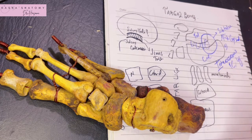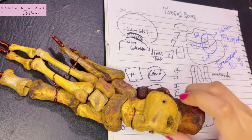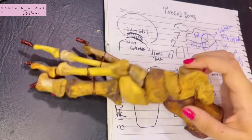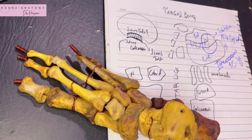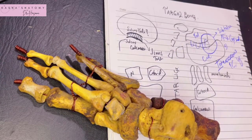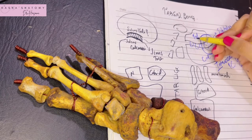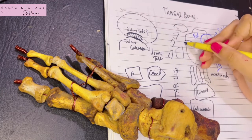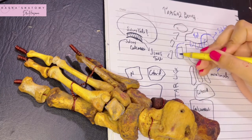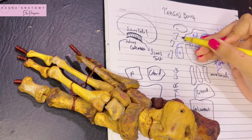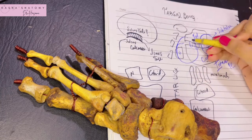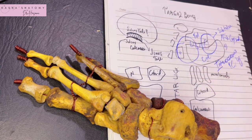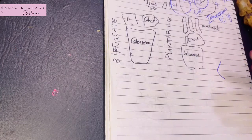The strongest ligament is the interosseous talo-calcanean ligament, and during eversion it is taut, while the cervical ligament is taut during inversion of the foot. Now let's talk about the next joint — the talo-calcaneo-navicular joint.